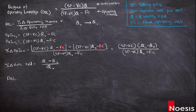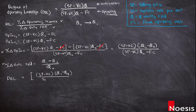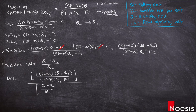Substituting both into the formula: in the numerator we have (selling price minus variable cost per unit) times the change in units sold, divided by the operating income — and then we divide by the percentage change in units sold, which is (Q₁ − Q₀) over Q₀.